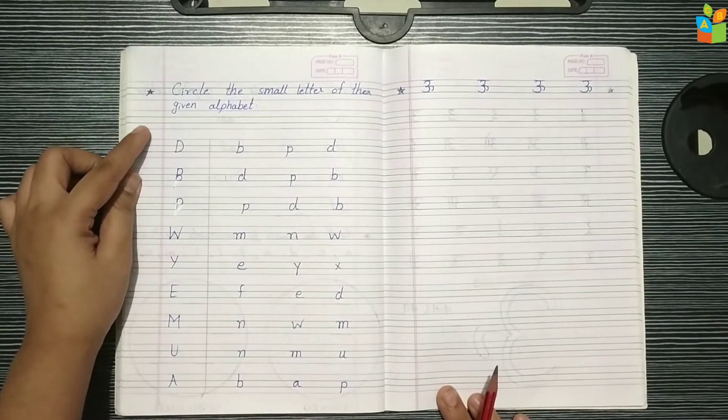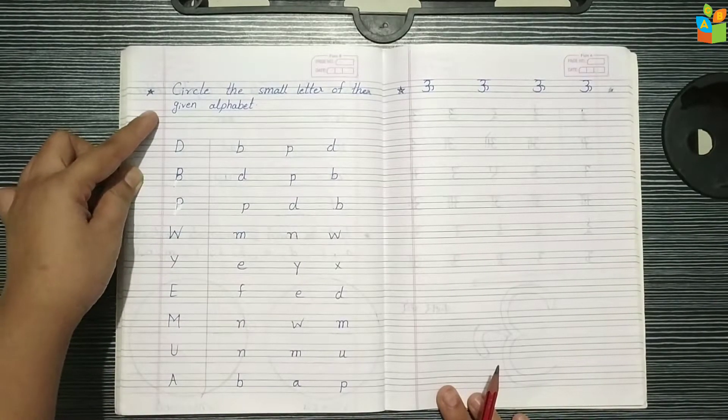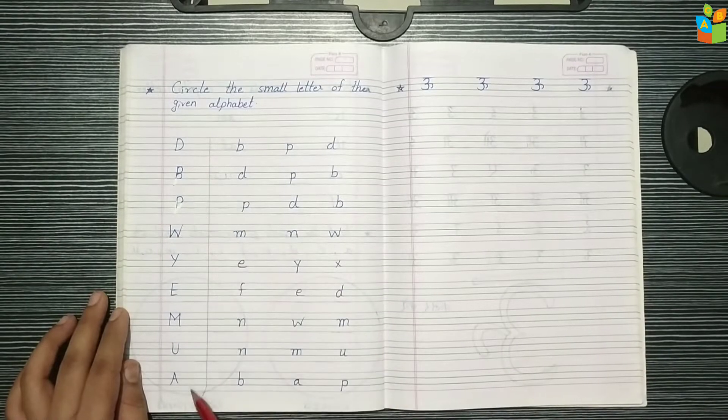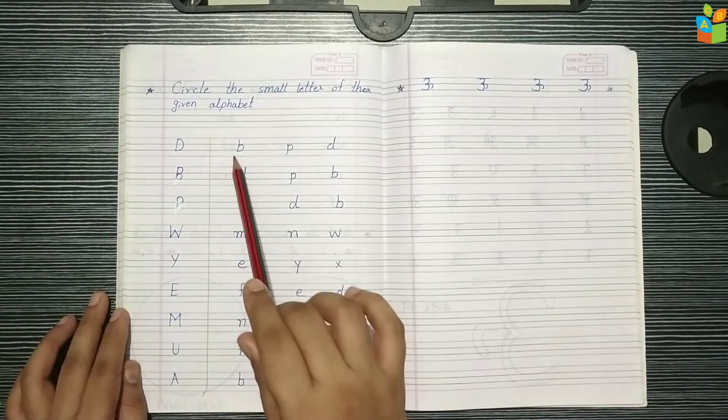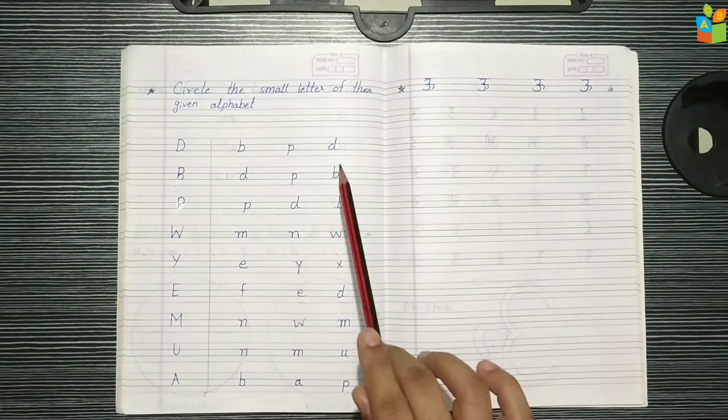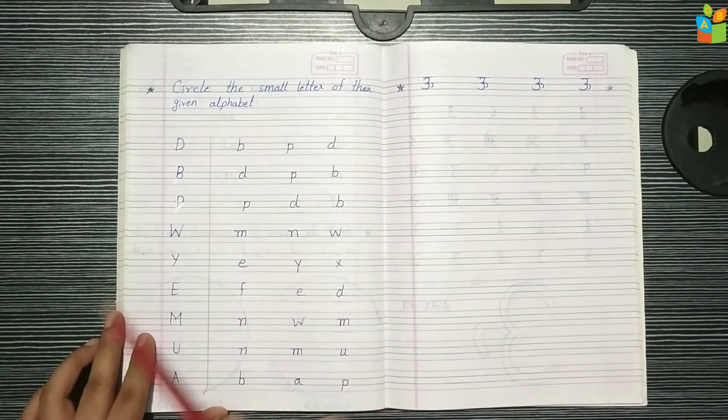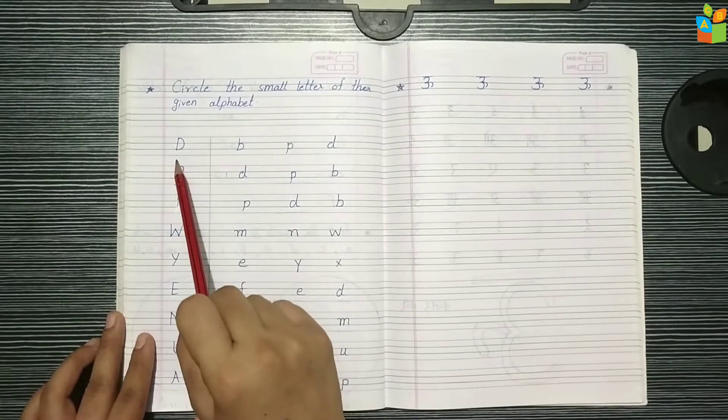Next is circle the small letter of the given alphabet. I have written some alphabets here in capital letter, and here in small letters. The child has to identify which one letter it will be, so they have to circle it as well.